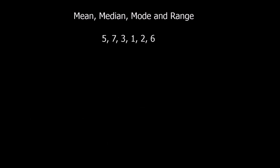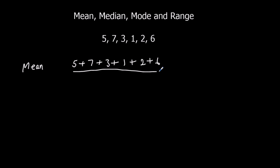Let's do another example. We'll work through them again in order. The mean — add them all up, divide by how many. We've got 5, 7, 3, 1, 2, and 6. This time there are 6 numbers, so we divide by 6. They add up to 24. 24 divided by 6, that's 4. So the mean is 4.